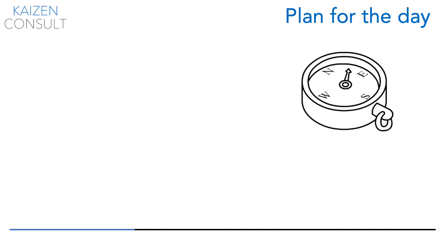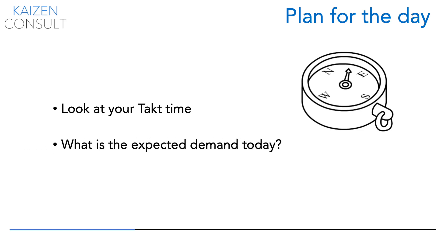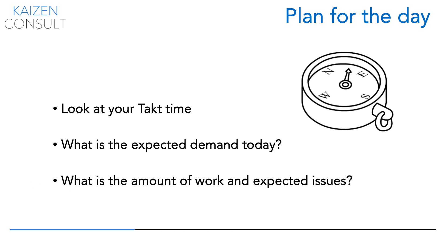When planning for the day, look at the takt time for the day, the week, and the month, and adjust your production accordingly. What is the expected demand today? What is the amount of work and expected issues? Anticipate capacity issues and problems to deliver.